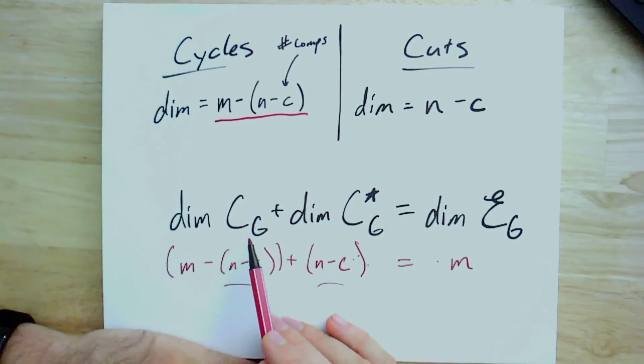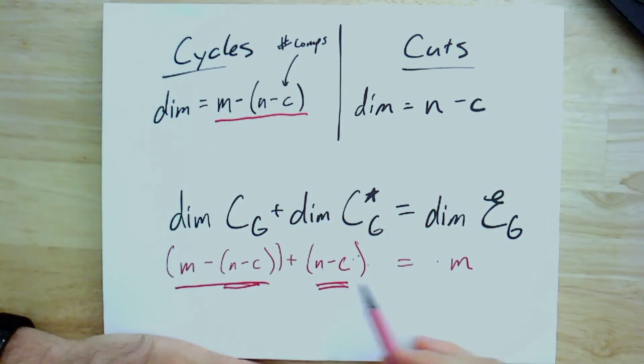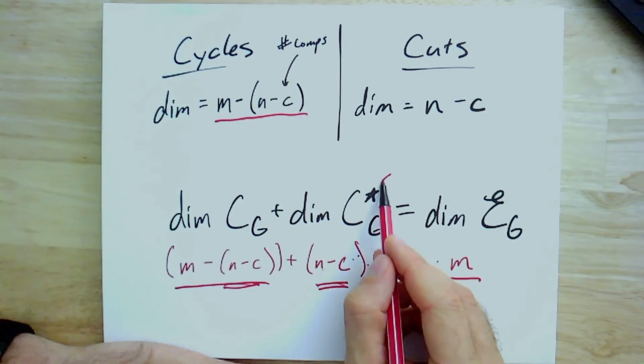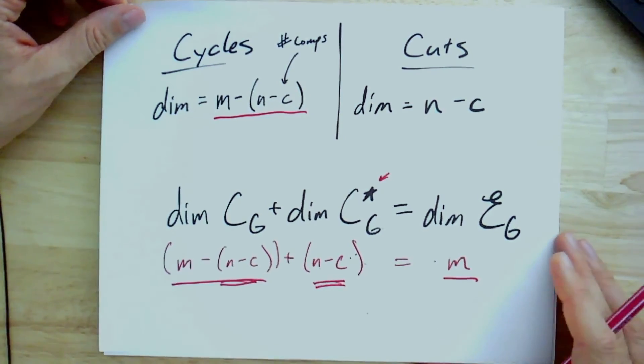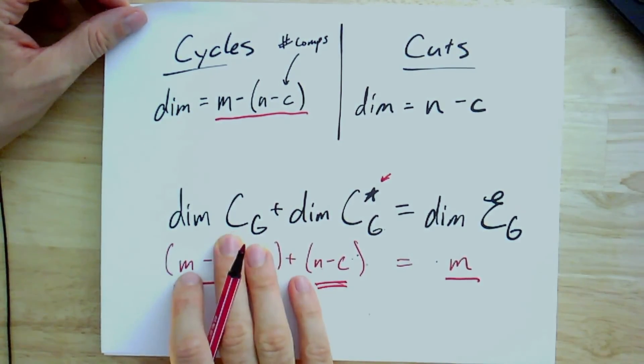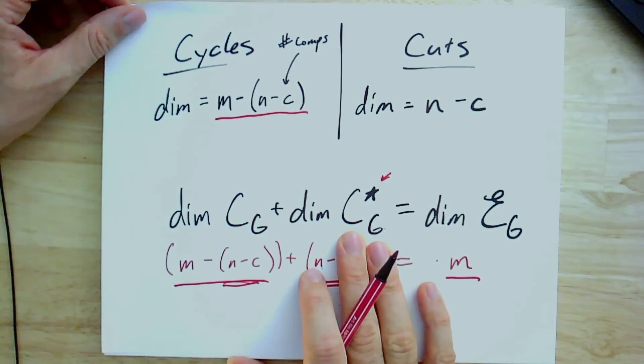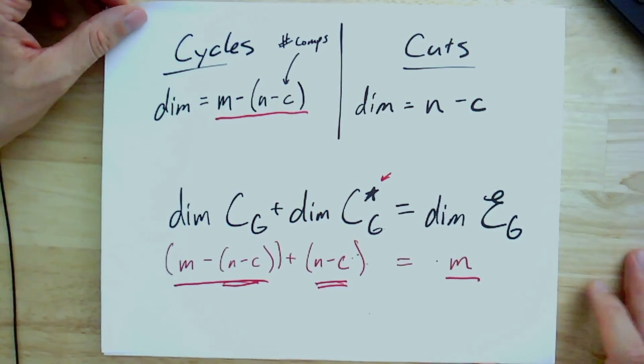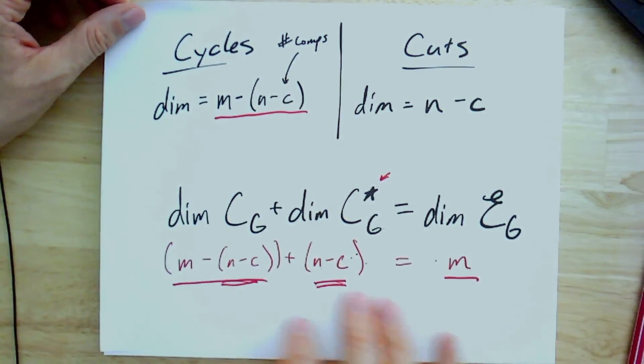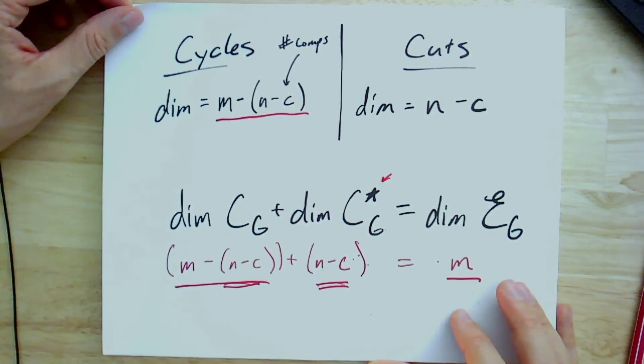So if you put these together, really we're saying that the dimension of this cycle space plus the dimension of the cut space is this plus this. And you see that this is the same term, right? n minus c, n minus c, it cancels out. It just gives you m, which is the dimension of the entire edge space. And so that's, in fact, the reason for this little star up here is that what you're really seeing is an example of the standard rank nullity theorem because the cycle space and the cut space are both really generated by, in one sense, the kernel and the rank of the incidence matrix. So these two vector spaces really give you all of the edge space.